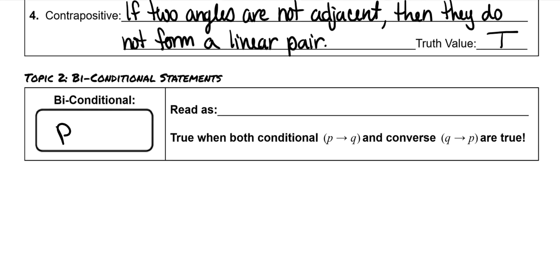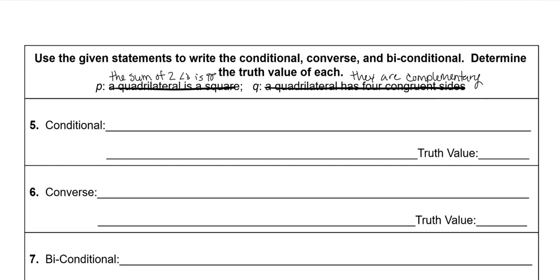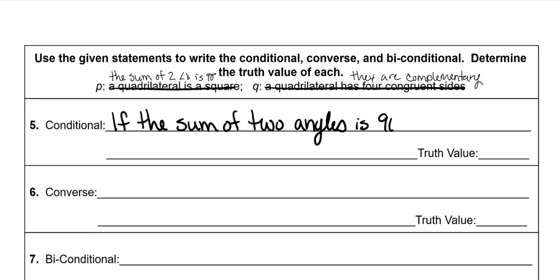Biconditional statements are P if and only if Q. Note: this should have been corrected on yours already — P should be 'the sum of two angles is 90 degrees' and Q should be 'they are complementary.' The conditional is if P then Q: if the sum of two angles is 90 degrees, then they are complementary.